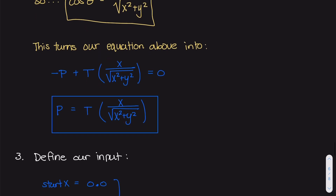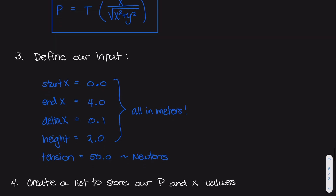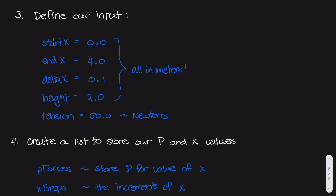We figured out that our force P is an equation in terms of the tension force, our x distance from the pulley, and our y distance which is the height from the bar to the pulley. For our algorithm, the first thing we need to do is define our inputs: start x value, end x value — 0 and 4 respectively — our increment delta x, our height y value of 2 meters, and our tension of 50 newtons.